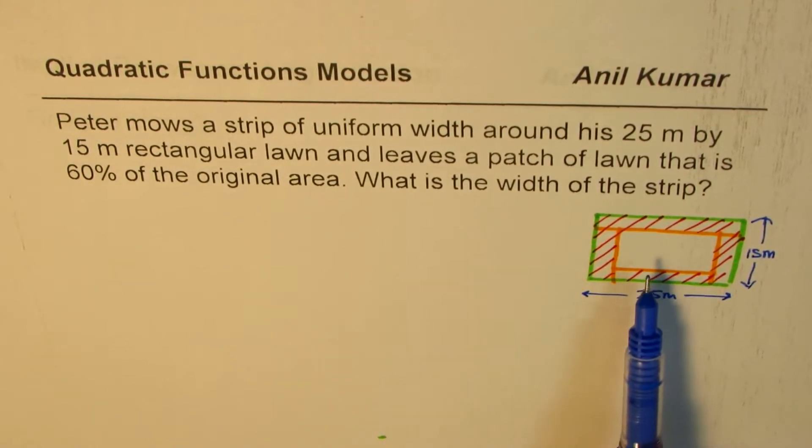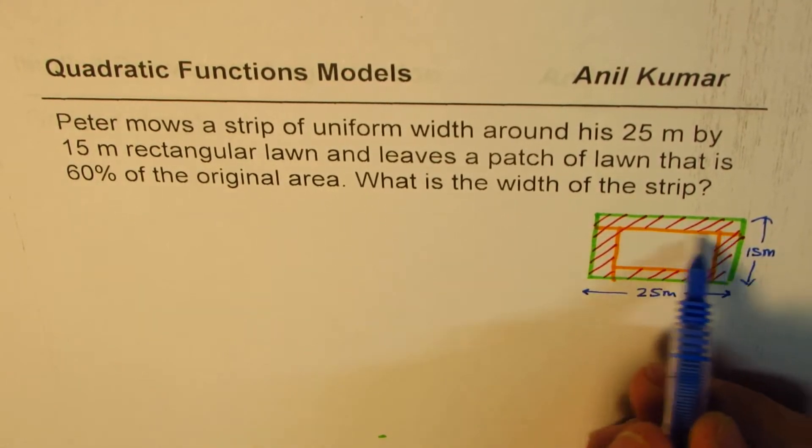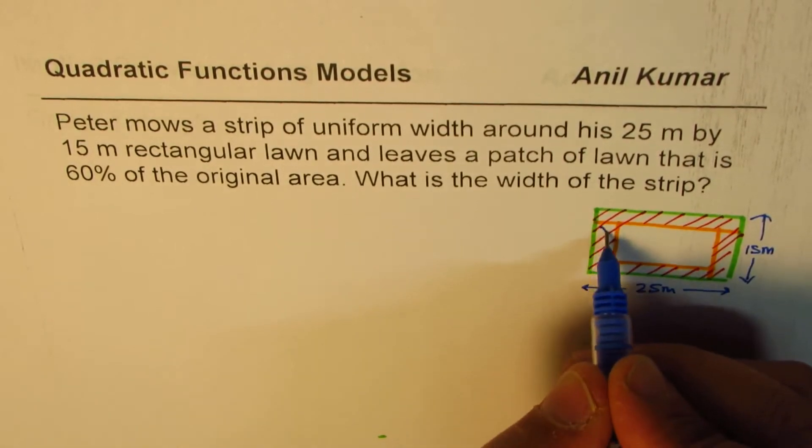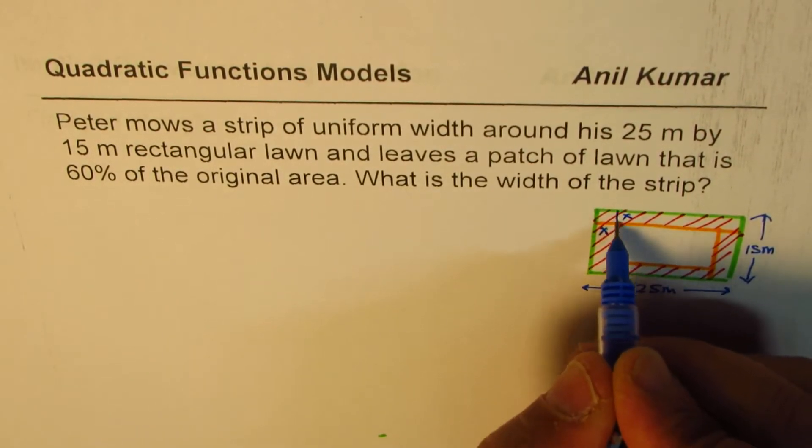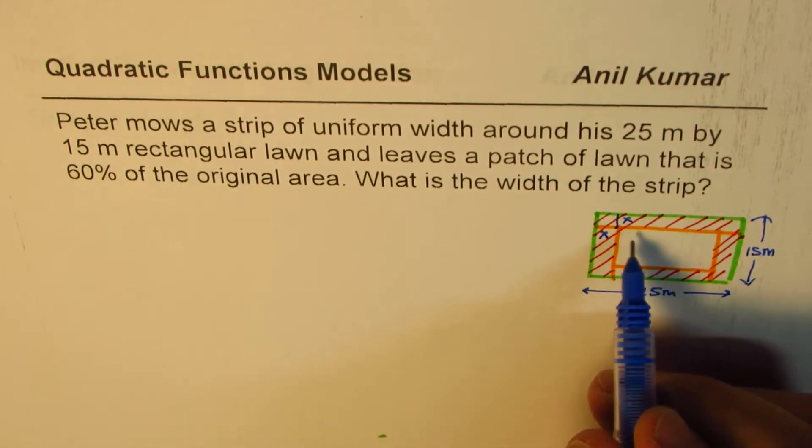Now what is the length of the left portion? Let this be x - the portion which has been removed be of width x meters.